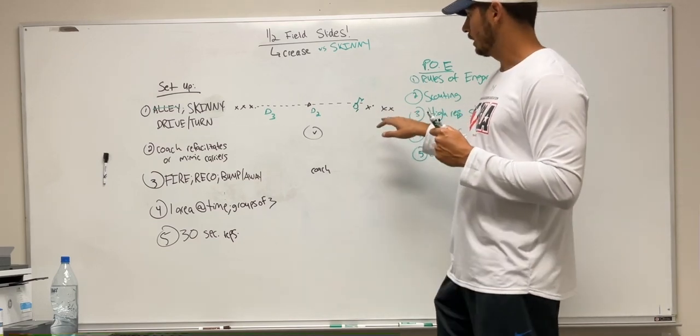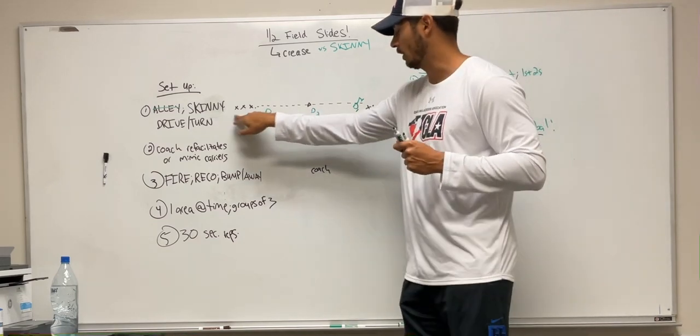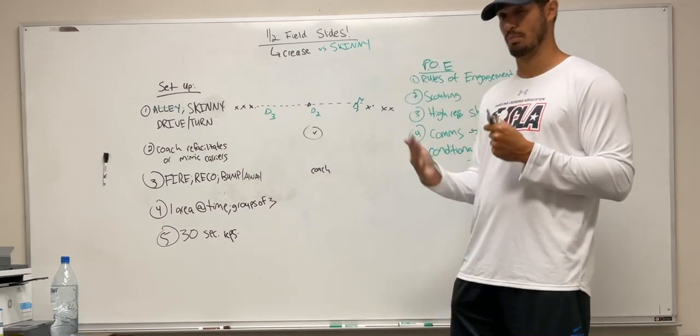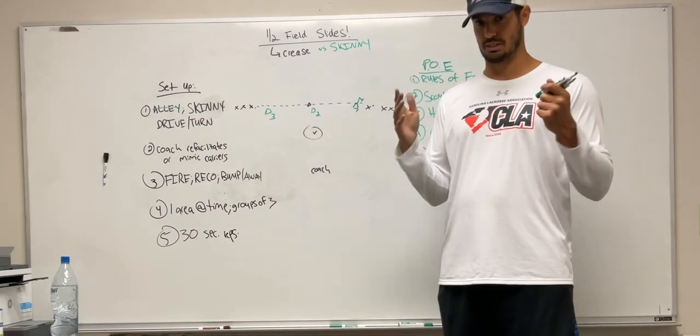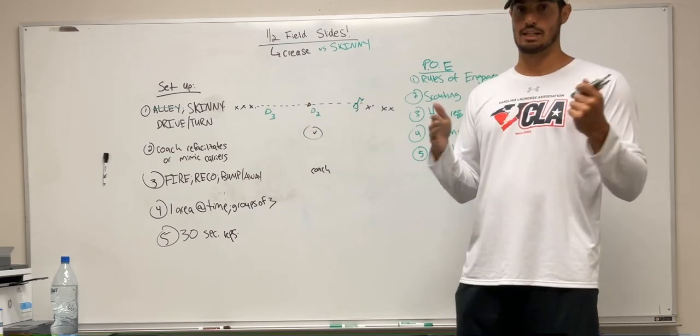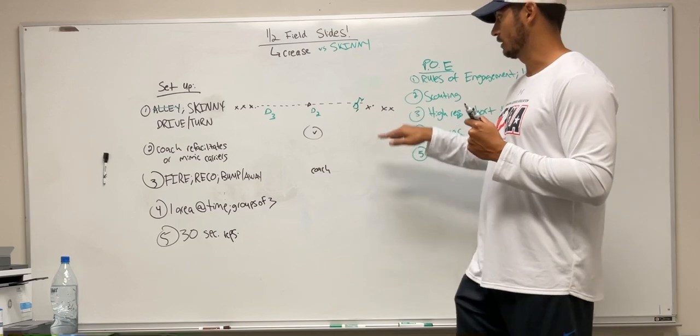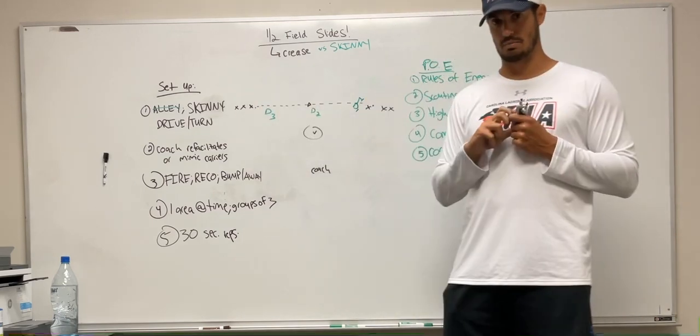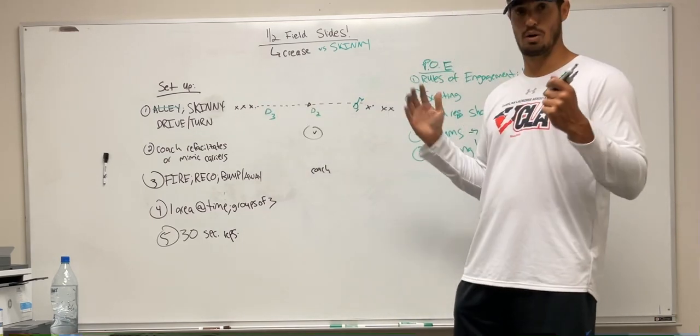Number one, setup wise, I would have two lines on each one of the wings of either ball carriers if you have those. If you want to work this as a team, middies and attack can go here just because they're used to handling the ball and that's what they do. Or you can have defensive players dummy those and mimic them without a ball or with.